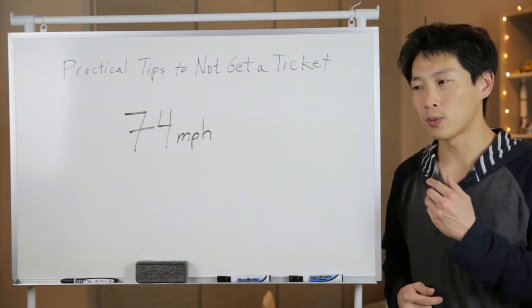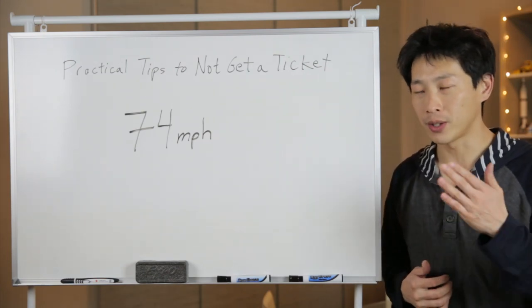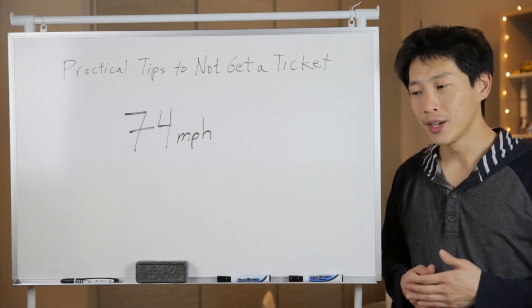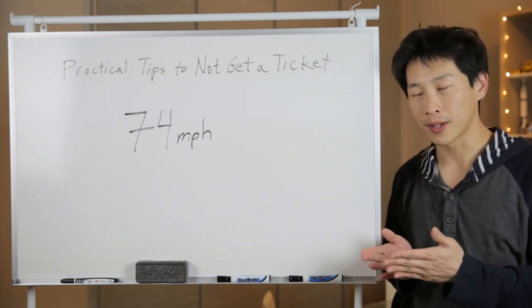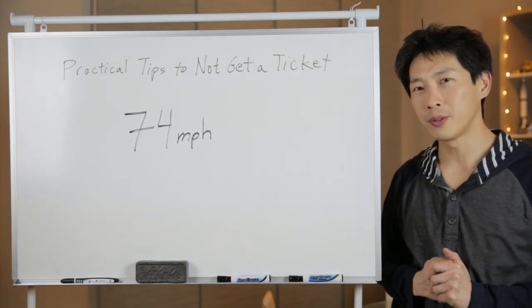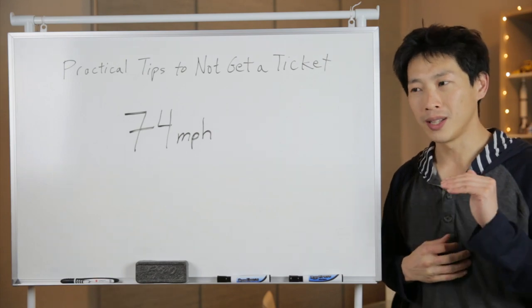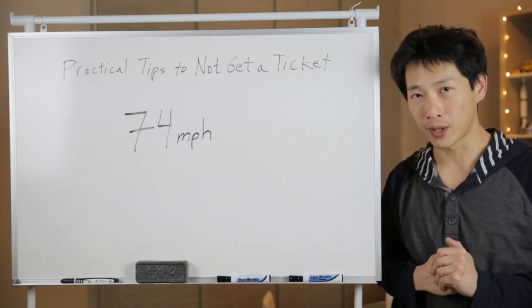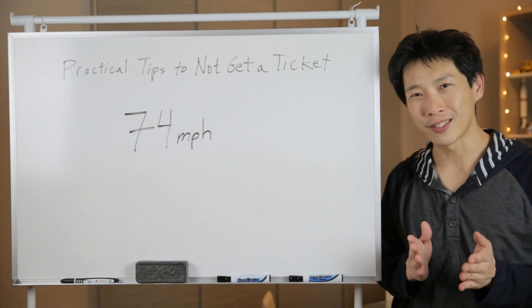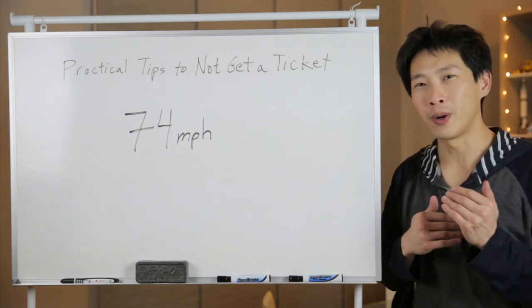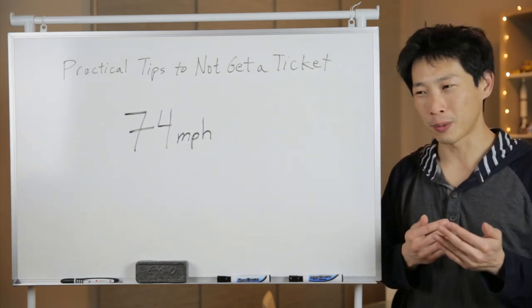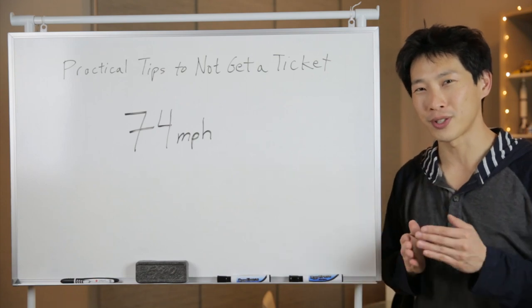I say 74 because when you go at 74 miles an hour on the carpool lane or on the fastest lane, you're most likely going with traffic. If you go a little bit above that, you'll notice that you start to go a little bit faster than everyone else. Go in second place all the time really. If there's someone else a little bit faster than you, the policeman is going to catch the faster person and not you.